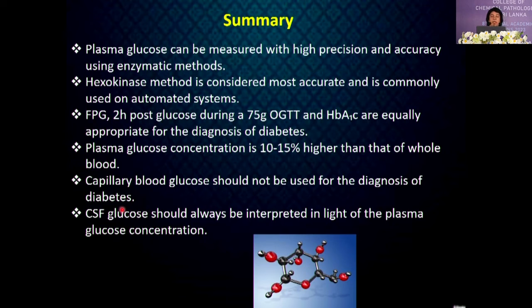In summary, plasma glucose can be measured with high precision and accuracy using enzymatic methods. The hexokinase method is considered the most accurate and is commonly used on automated systems. Fasting plasma glucose, 2-hour post-glucose during 75 g OGTT, and HbA1c are equally appropriate for diagnosing diabetes. Plasma glucose concentration is 10–15% higher than that of whole blood, and capillary blood glucose should not be used for the diagnosis of diabetes. CSF glucose should always be interpreted in light of the plasma glucose concentration. Thank you.